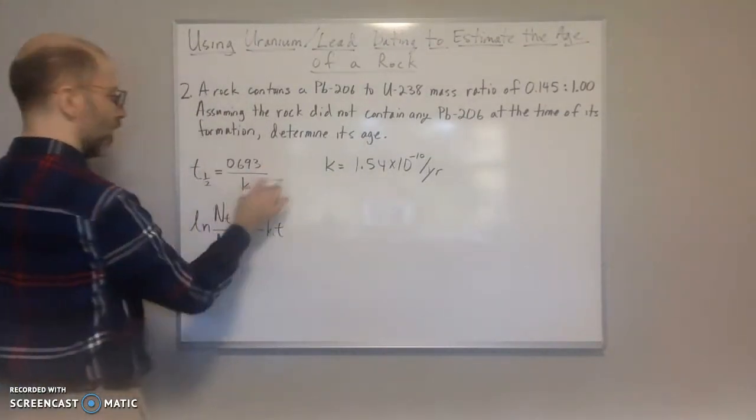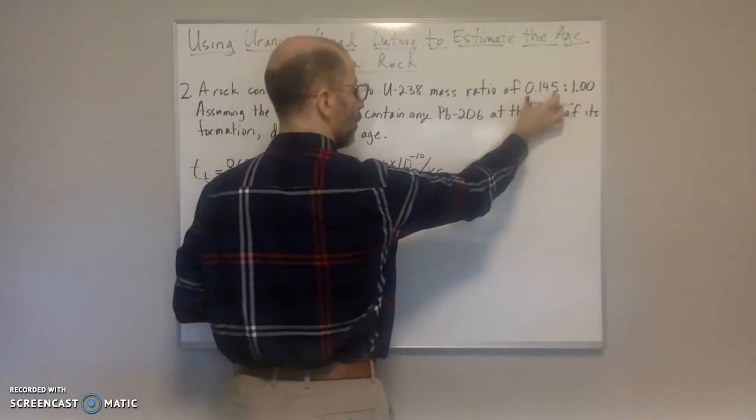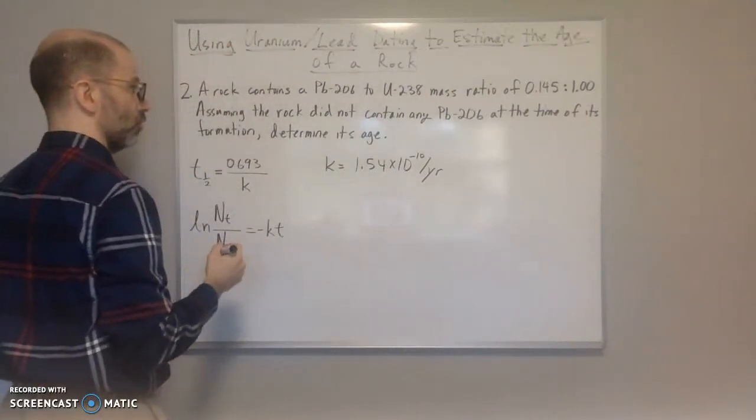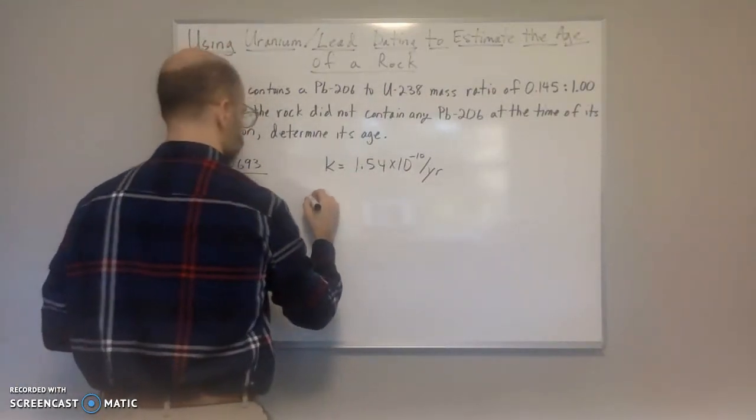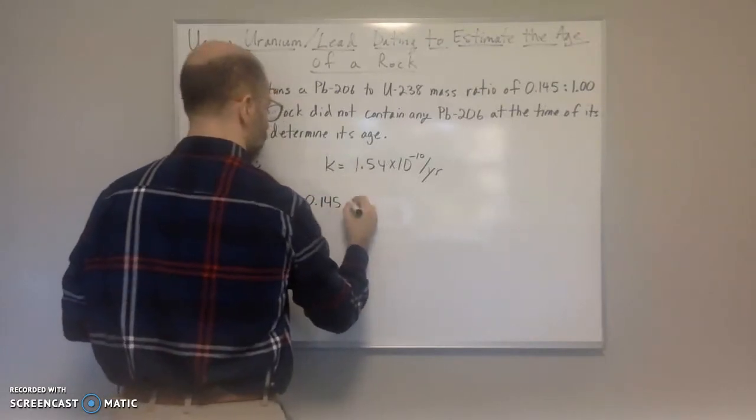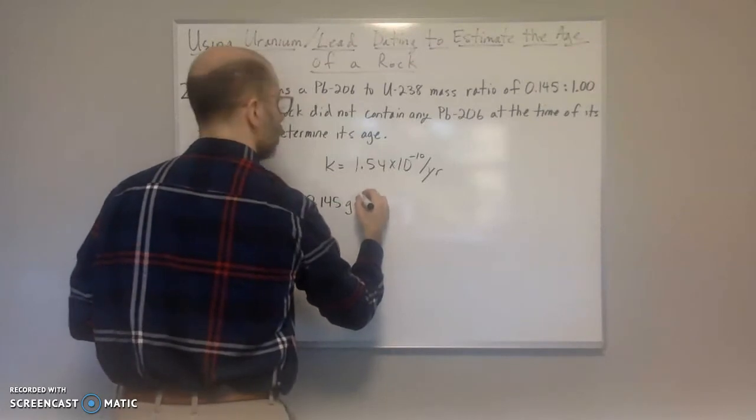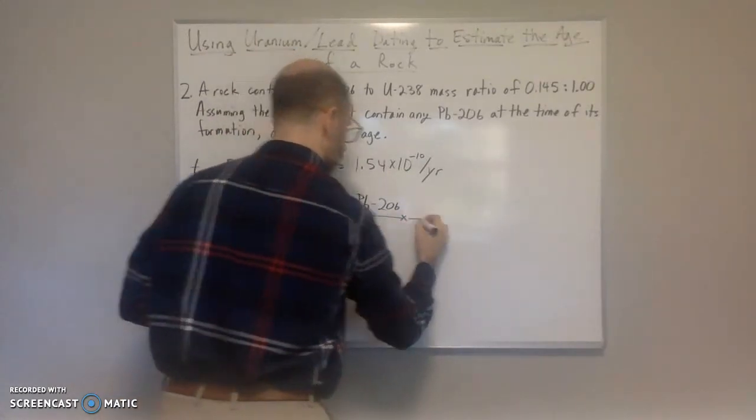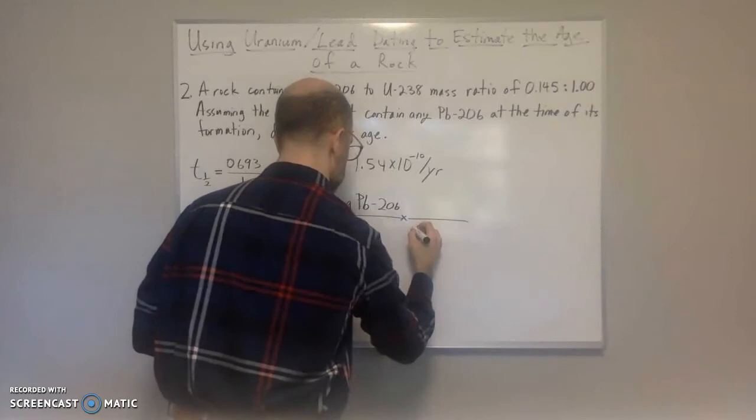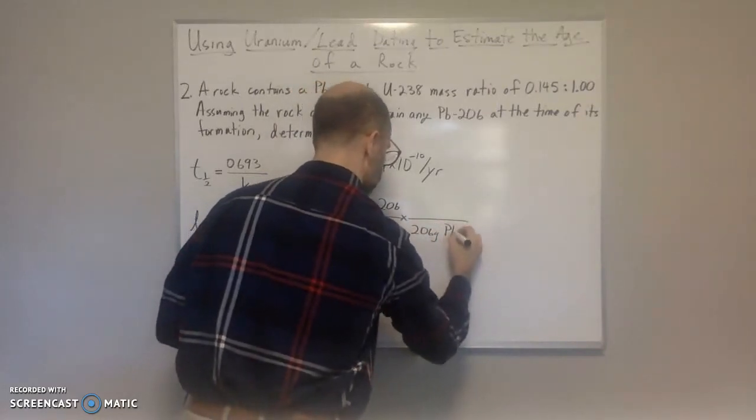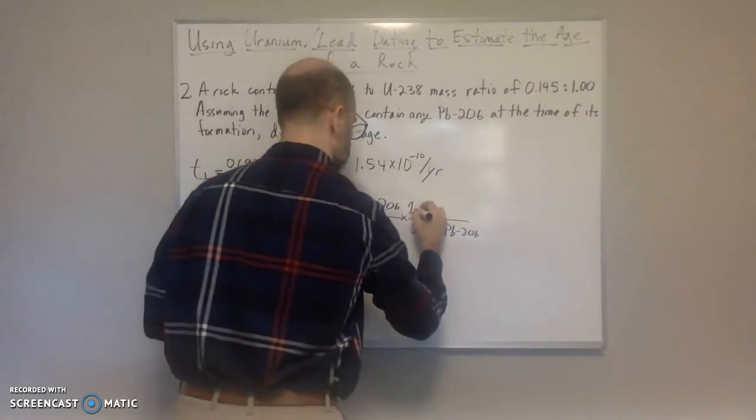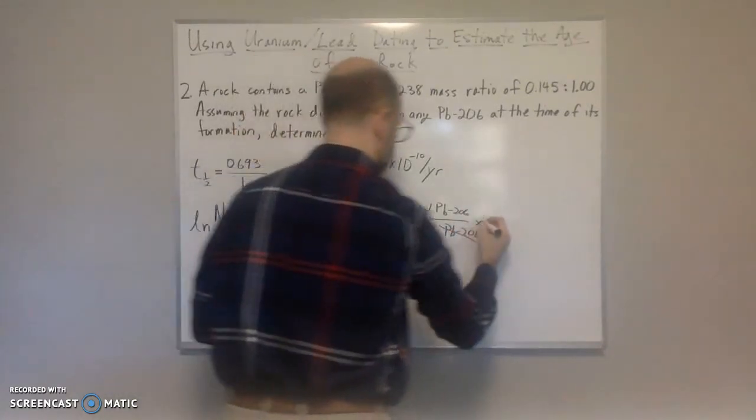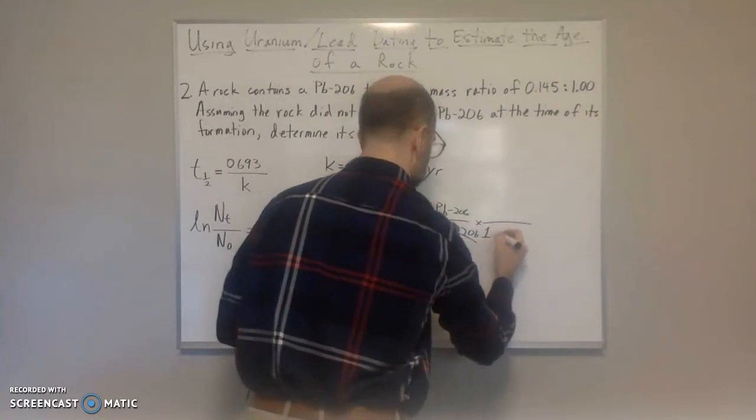What we're going to do again is we need to convert the 0.145 lead to original amount of uranium-238. So again, we're going to start with 0.145 grams of lead-206. We're going to convert that to moles. So we got 206 grams of lead-206 over 1 mole of lead-206. Grams cancel out. Now we got the 1 to 1 ratio.